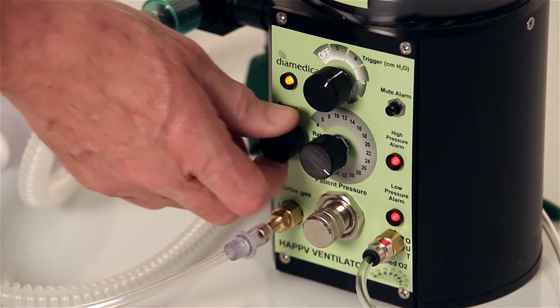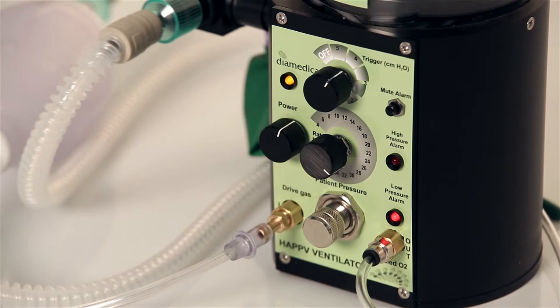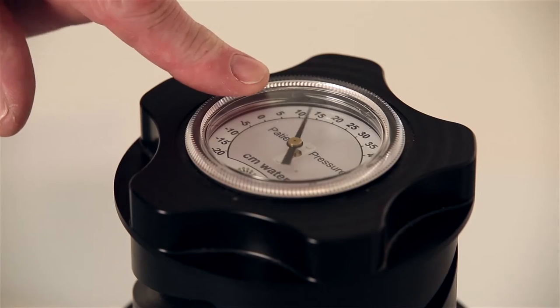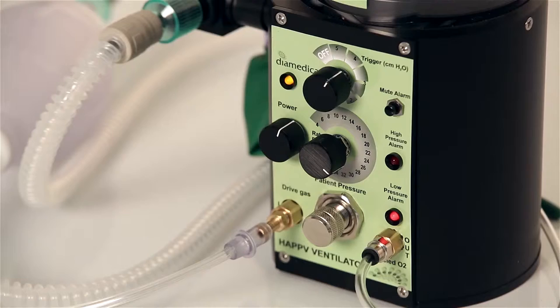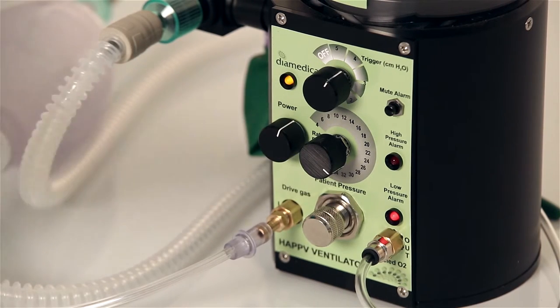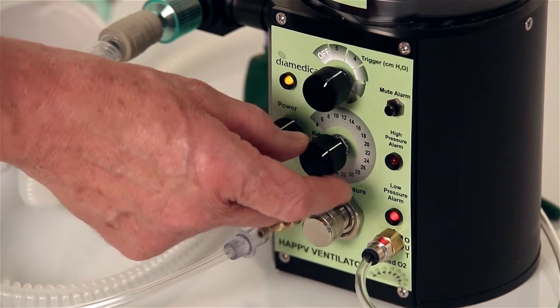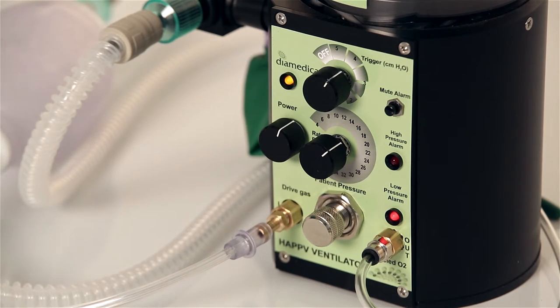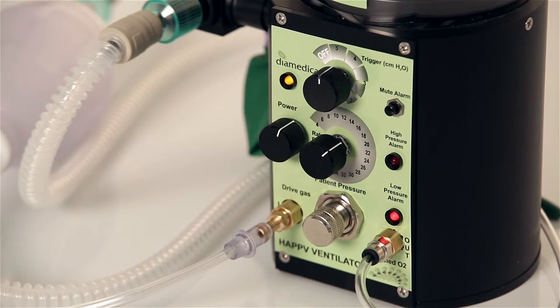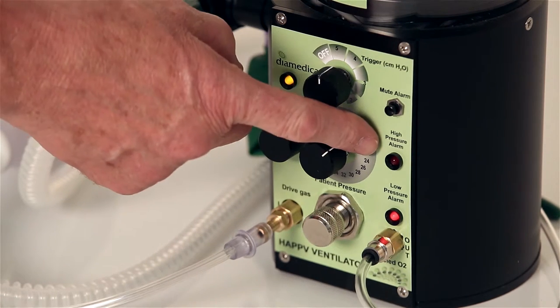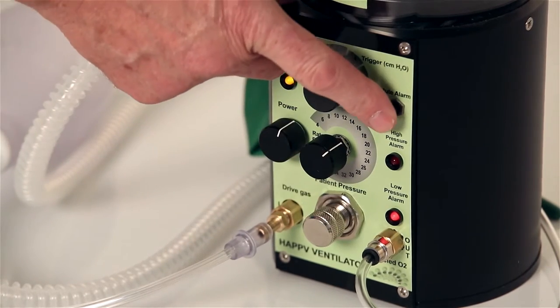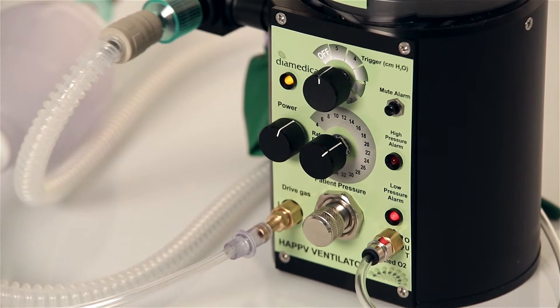There is an on-off control with a power-on light and a patient pressure control with the pressure gauge mounted in the top of the helix screw. There is a breaths per minute control that will provide a rate from 4 to 40 breaths per minute by simply turning it to the desired setting, and a triggered breathing control to assist weaning or to provide pressure support. There is an alarm for high pressure and low pressure or disconnect alarm with a mute for the audible low pressure alarm.